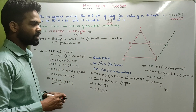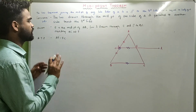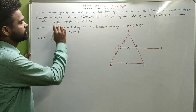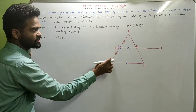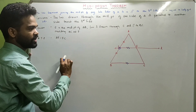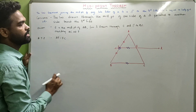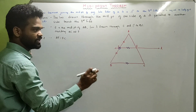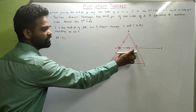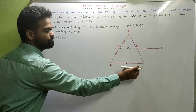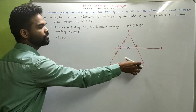Am I clear? Let us see the converse of this theorem. The converse says: The line drawn through the midpoint of one side of a triangle, parallel to another side, bisects the third side. Which means if E is the midpoint of AB and EF is parallel to BC, then F is the midpoint of AC.